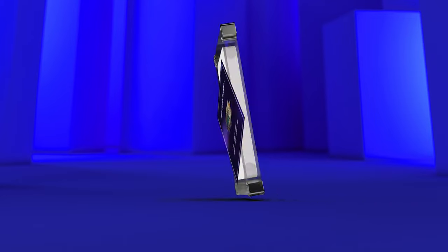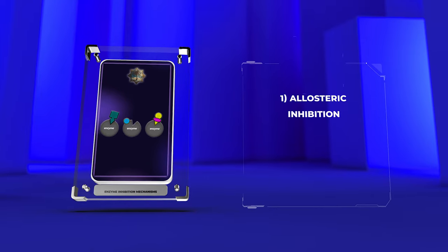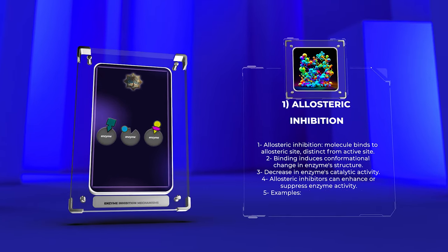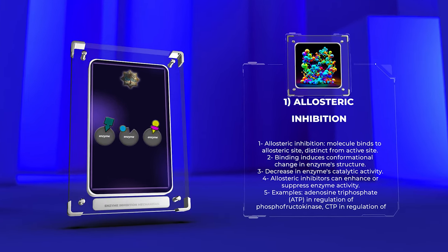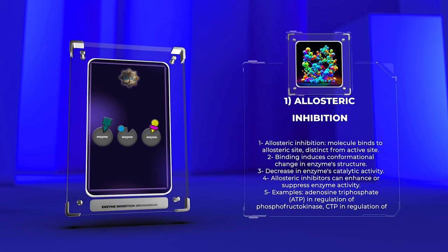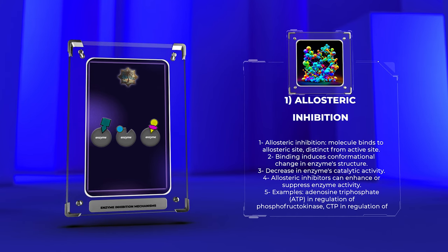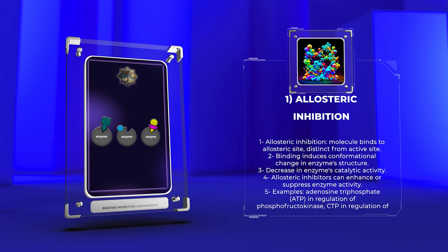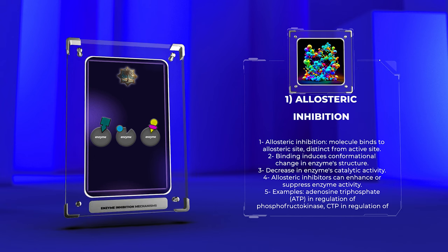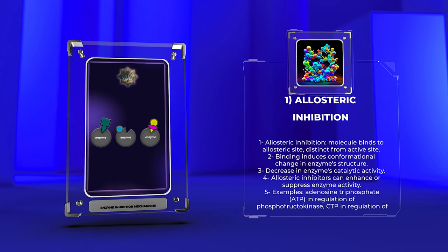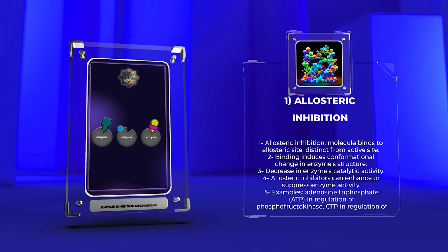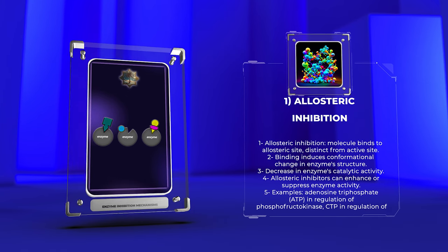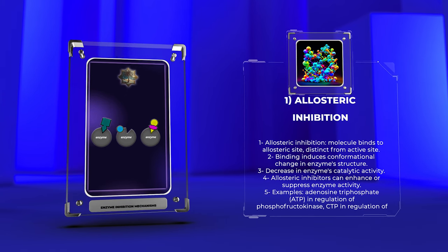Allosteric inhibition is a type of enzyme inhibition that occurs when a molecule binds to an allosteric site on the enzyme, distinct from the active site. This binding event induces a conformational change in the enzyme structure, leading to a decrease in its catalytic activity. Allosteric inhibitors can either enhance or suppress enzyme activity, depending on the behavior of the allosteric effector.